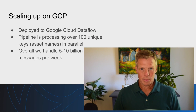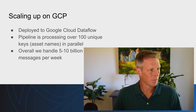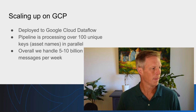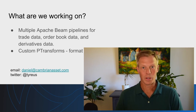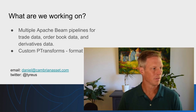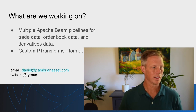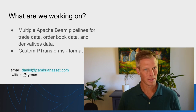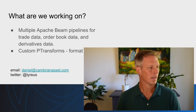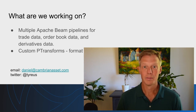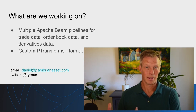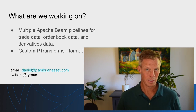This pipeline is deployed to Dataflow. We're currently processing about 100 unique keys in parallel and overall handling between 5 and 10 billion messages per week. We have multiple Apache Beam pipelines covering everything from trade data, order book data, and derivatives data. One of the great things about Beam is that it allows us to scale up very easily, so we're constantly adding new pipelines. We're also working on a lot of custom PTransforms to take the data we're ingesting and place it in a format where the data science teams can work with it directly.